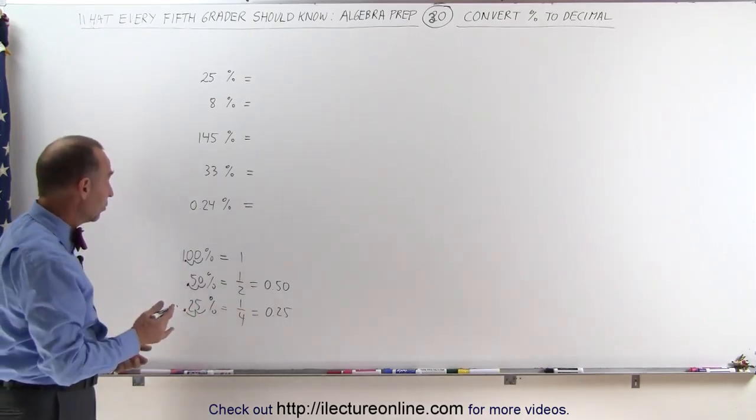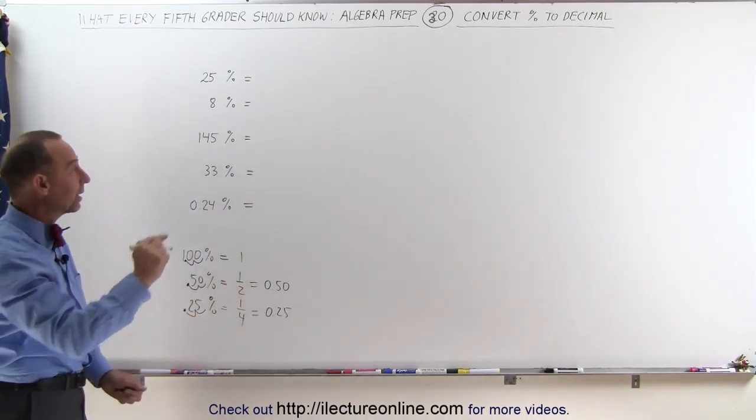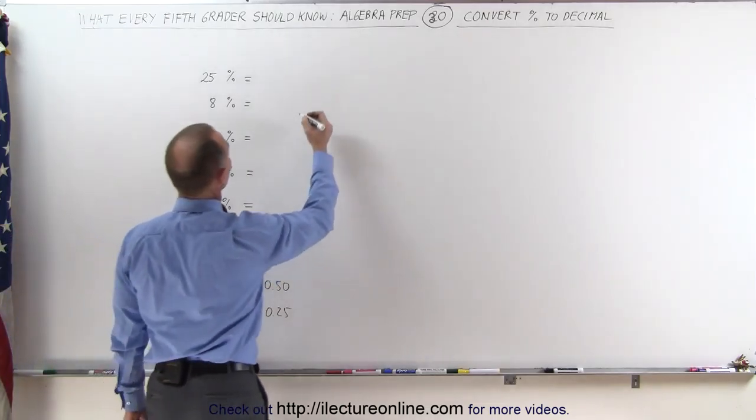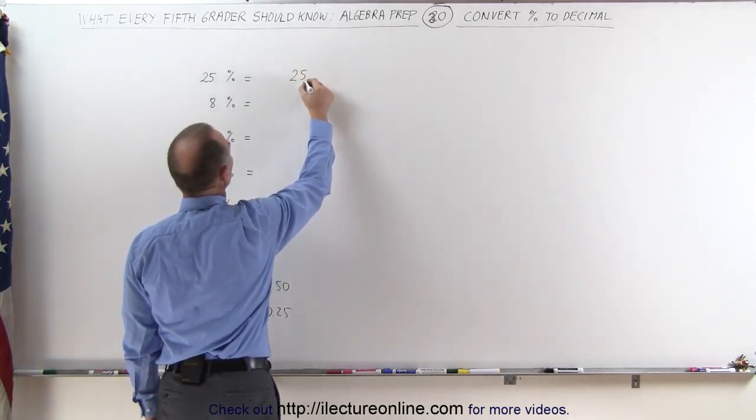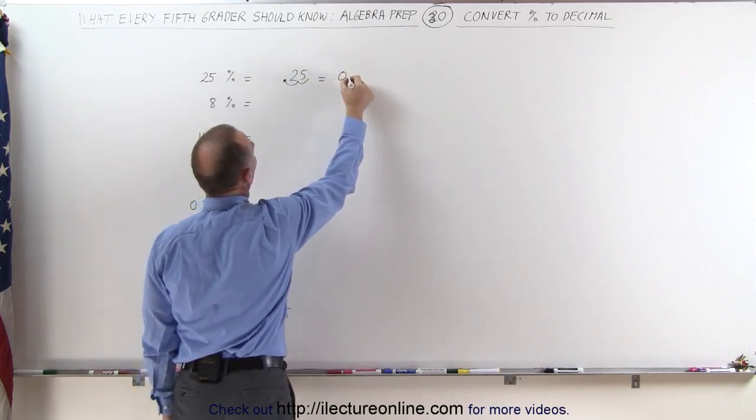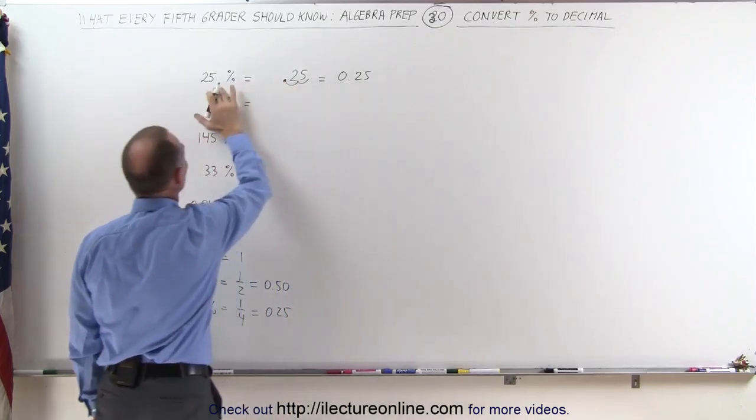So it looks like the technique to change a percent to a decimal is simply to write the number down and then to move the decimal place over two spots. Let's try that. We write the number down 25 and then we move the decimal place over two spots, which means it's 0.25. So 0.25 is the same as 25%.